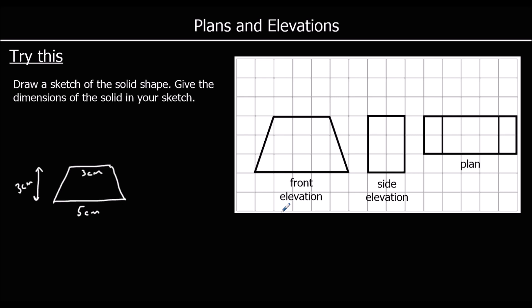How far does it go back? If you look at the side, the side goes back 2 centimetres. So it's going back 2 centimetres, and this is our shape.